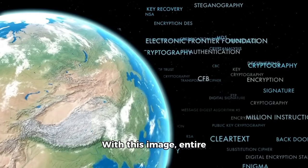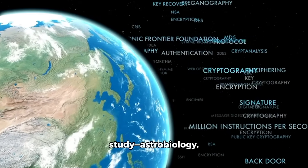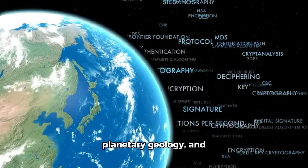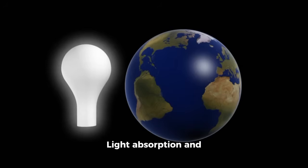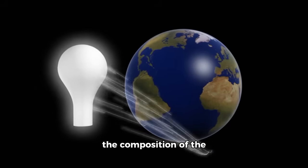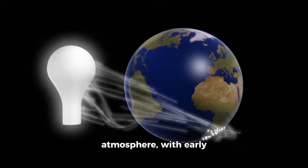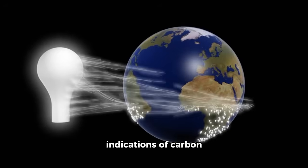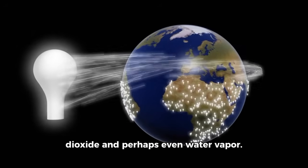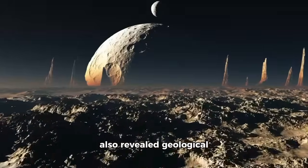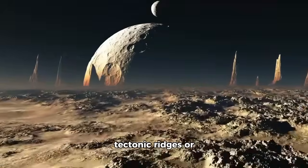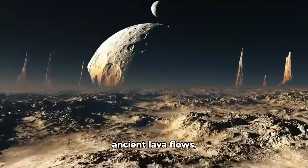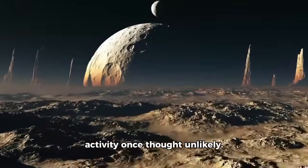With this image, entire fields of study—astrobiology, planetary geology, and atmospheric science—have gained a fresh foundation. Light absorption and scattering patterns hint at the composition of the atmosphere, with early indications of carbon dioxide and perhaps even water vapor. Unexpectedly, the image also revealed geological features resembling tectonic ridges or ancient lava flows, pointing to internal activity once thought unlikely.